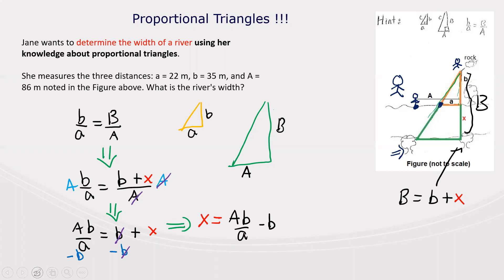Now she's ready to solve the problem because for this specific case she measures the distances. So I'm going to provide these distances and plug into the formula. From this given problem, a equals 22 meters, b equals 35 meters, and capital A equals 86 meters. Let's plug this into this equation.